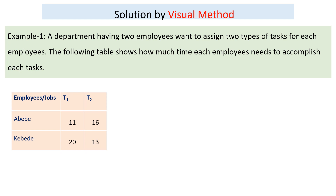Abeba requires 16 hours to finish task 2, and Computer requires 20 hours to finish task 1 and 13 hours to finish task 2. Since the number of employees or tasks here is small — a 2×2 matrix — it is possible to just use the visual method or estimation method by watching the time.